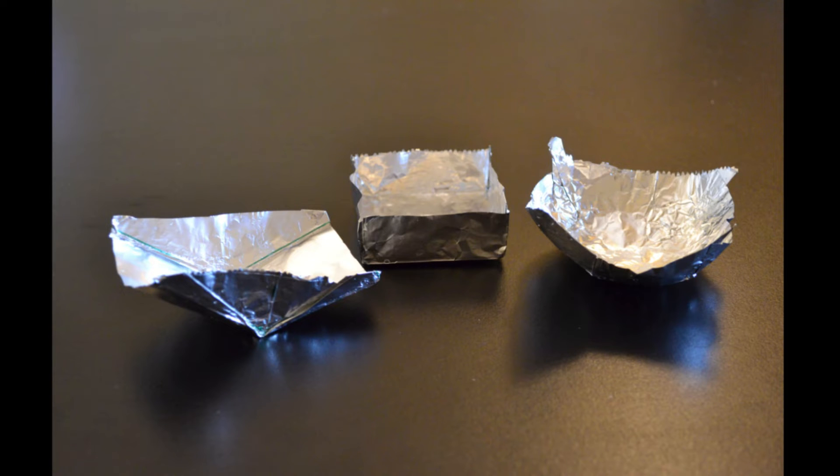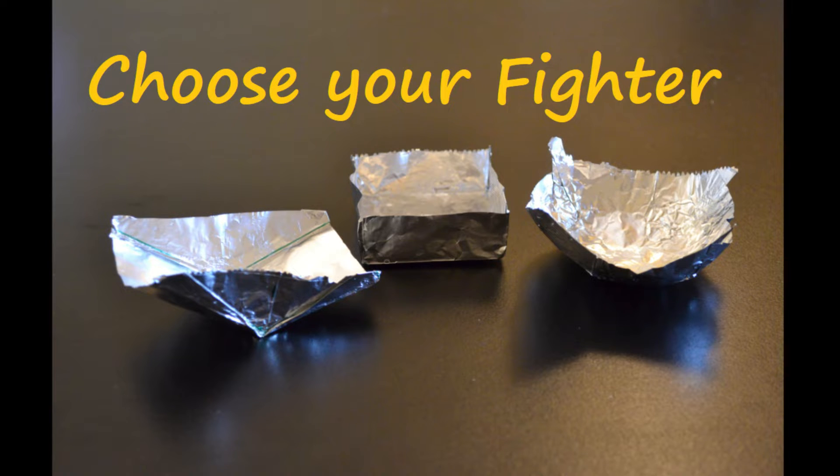Today we're going to optimize aluminum foil boats to hold as many pennies as possible. We will look at three common shapes: a canoe, a cube, and a sphere. Which one do you think will hold the most?